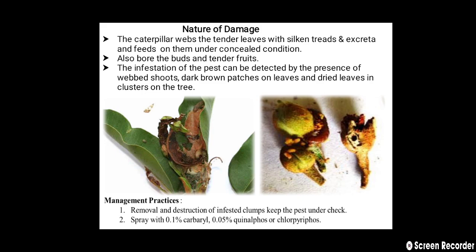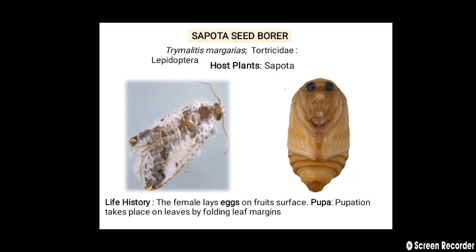Then we can see the different damage symptoms on the bud. Management practices include removal and destruction of infested clumps. In chemical control, we can spray with 0.1% carbaryl, 0.05% quinalphos or chloropyrifos.